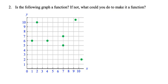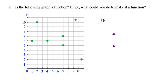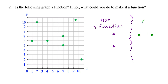It says: is the following graph a function? If not, what could you do to make it a function? When you're dealing with graphs and individual points, if any two points are lined up vertically — one on top of the other — that is not a function. If the points are lined up horizontally, that's okay. But if you have any points lined up vertically, it's not a function.